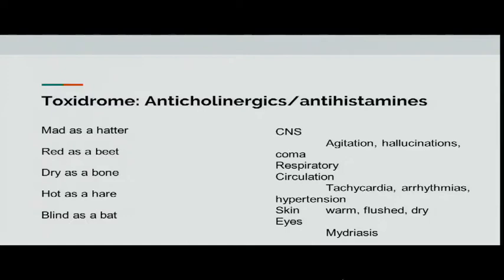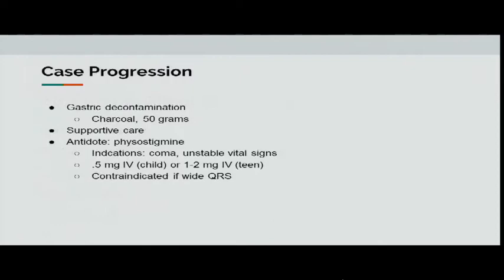The anticholinergic toxidrome is remembered as: mad as a hatter, red as a beet, dry as a bone, hot as a hare, blind as a bat. CNS findings include agitation, hallucinations, and coma. Circulation shows tachycardia, arrhythmias, and hypertension. Skin is warm, flushed, and dry. Management includes gastric decontamination with charcoal and supportive care depending on the amount ingested. The antidote is physostigmine — indicated for unstable vital signs, coma, or if the patient is not improving. Dose is 0.5 mg IV for children, 1 to 2 mg IV for teenagers. Contraindicated if the patient has a wide QRS — get an EKG prior to use.